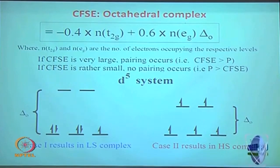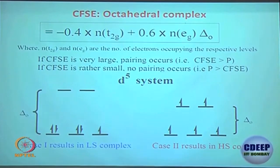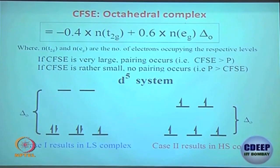D⁷ can have both high spin and low spin configurations. For D⁷ low spin, the CFSE calculation: 5 electrons in T₂g each contribute −0.4 Δ₀, giving −2.0 Δ₀. If 5–7 math-based questions appear in the exam, they will almost certainly be based on these CFSE calculations.